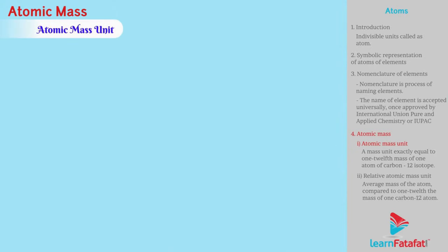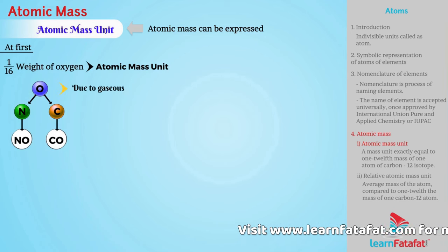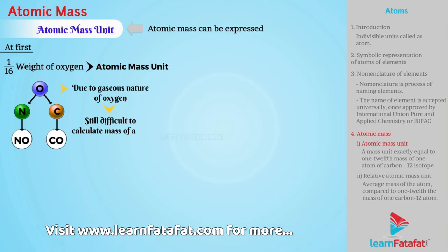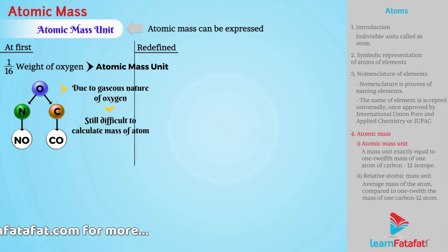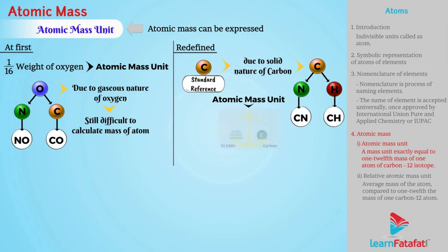Atomic mass unit. Atomic mass can be expressed with this unit. At first, scientists chosen 1/16th weight of oxygen as atomic mass unit. This is because oxygen reacts with most of the elements to form various compounds. But, due to gaseous nature of oxygen, it was still difficult to calculate mass of atom. Hence, they chosen carbon as standard reference due to its solid nature and ability to form compounds with many elements. Therefore, atomic mass unit can be redefined as a mass unit exactly equal to 1/12th mass of 1 atom of carbon-12 isotope.